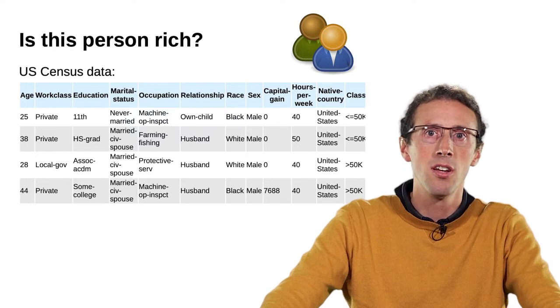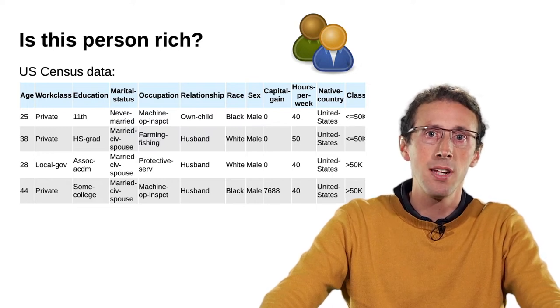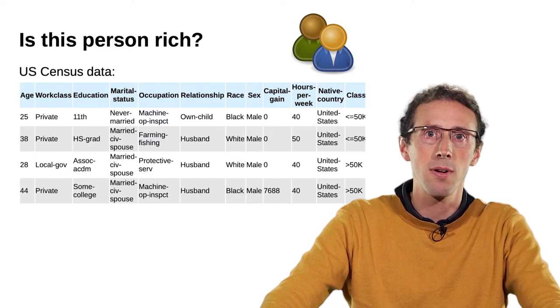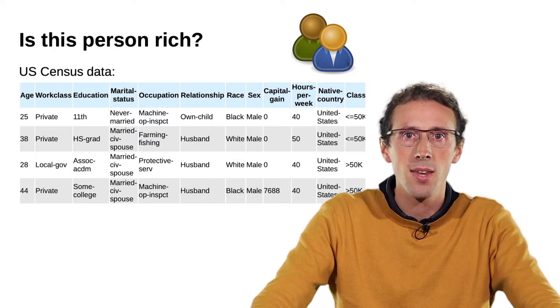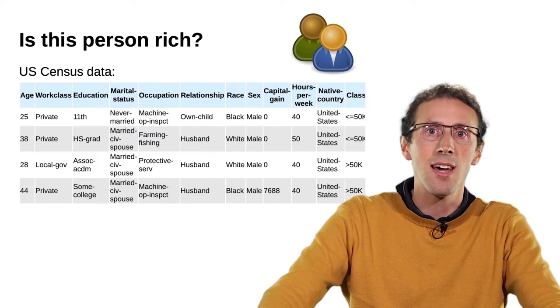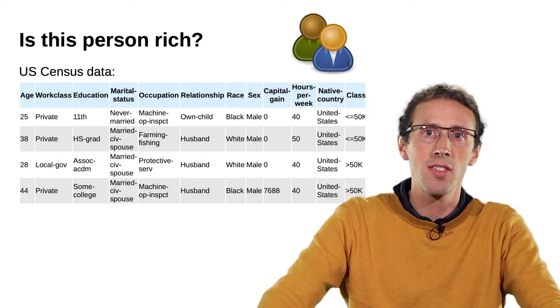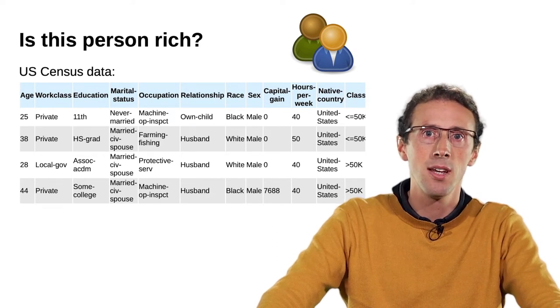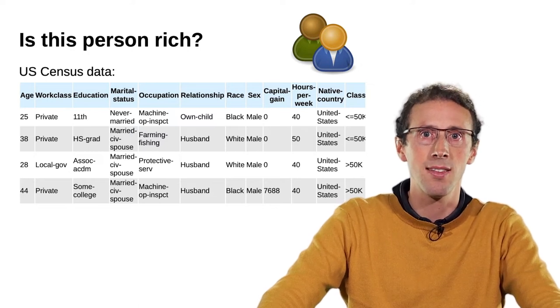We can use machine learning to build rules that will predict this income information from the rest of the demographic information. You can also see that even in a simple example like this, having intuitions about the information available on many individuals can be a bit challenging. Data visualization will come in handy.